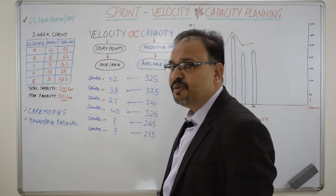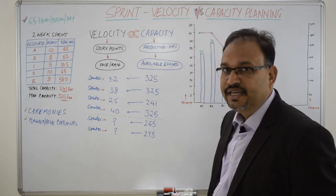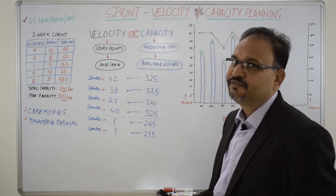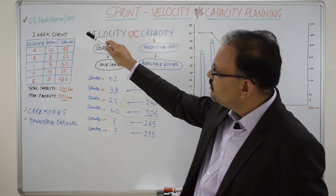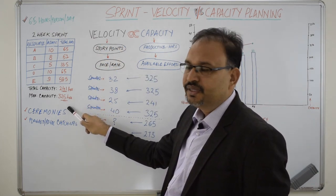What is the maximum capacity of the team? If everybody would have been present in the office for full 10 days, everybody would have clocked 65 hours of productivity. The sum of that would have been the maximum capacity of the team. That is 325.